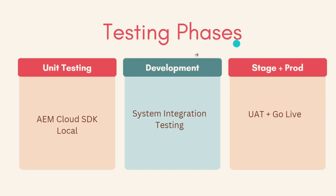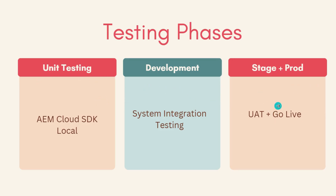These are the different testing phases. One is unit testing, which the developer does on his local. Then in the development server — if you have just one — you can block it for System Integration Testing. As for Stage and Prod, whatever code is pushed onto Stage, the same code gets pushed onto Prod; there is only one pipeline. You can put the UAT phase in the Stage: once code is pushed into Stage, UAT happens and you approve it to go into production. That's how you divide your testing phases across environments.